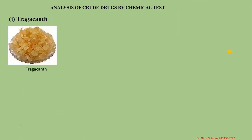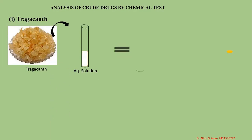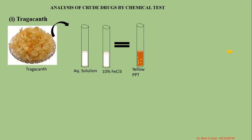The second drug is tragacanth. It is also known as a gum. Tragacanth is used in different types of pharmaceutical preparations, such as microbiological preparations, to increase viscosity, and as a suspending agent. Prepare the aqueous solution of tragacanth. Add 10% ferric chloride solution — a yellow color precipitate is formed. In the aqueous solution of tragacanth, when 10% ferric chloride solution is added, a yellow color precipitate is formed.